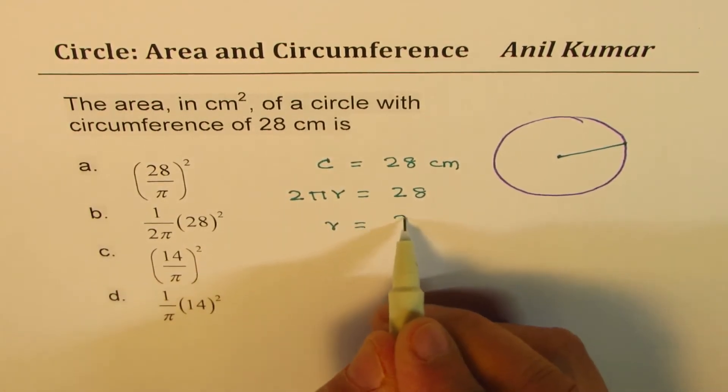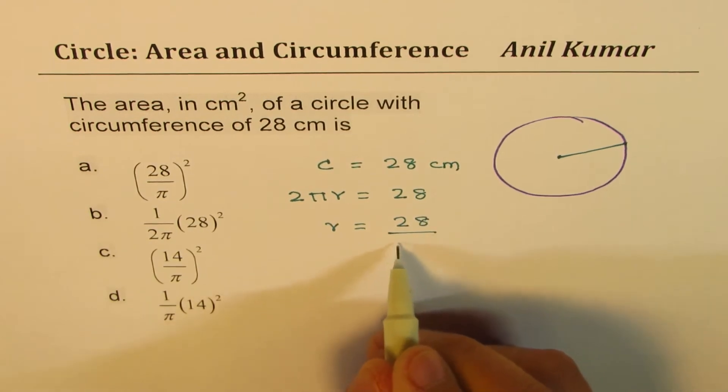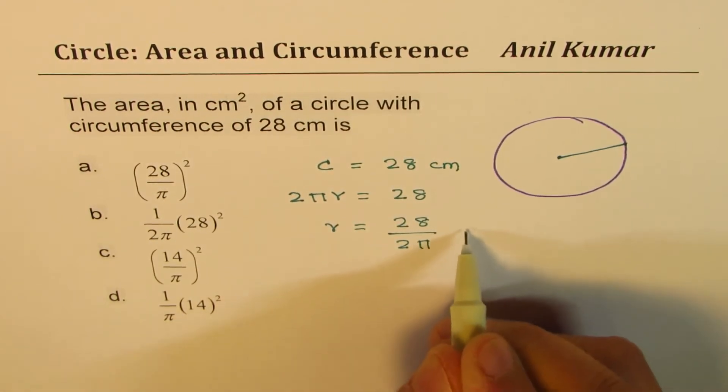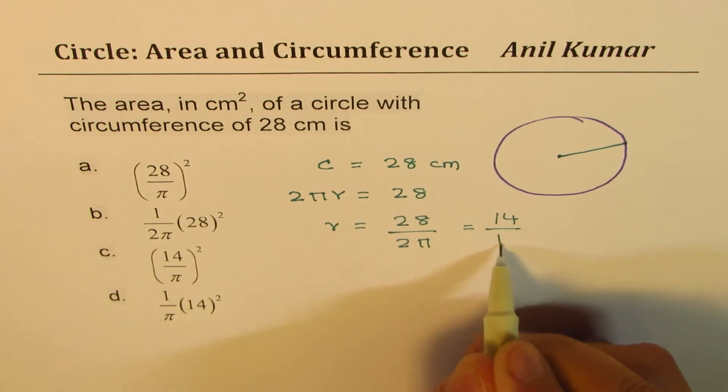Isolate r, so we get r equals to 28 divided by 2 times π, which is 14 over π, right?